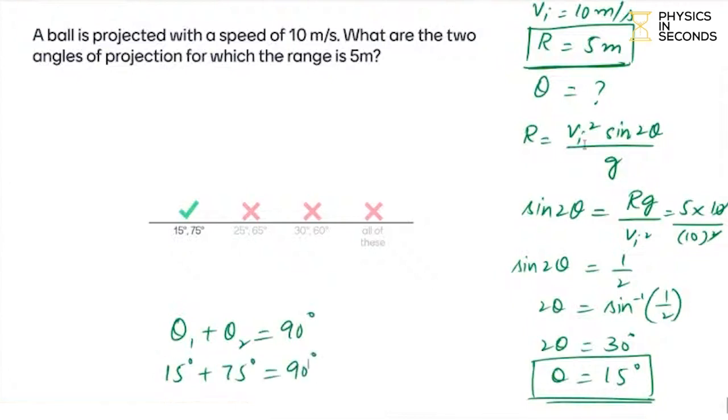We cannot say any random angle. So if a value is given, then you will have to see what angle is given. So 15 and 75.